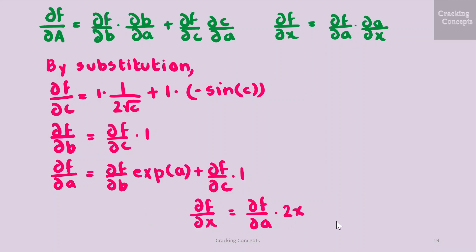By substituting the results of the derivatives of the elementary functions, we get: df by dC as 1 times 1 by 2 root c plus 1 times minus sin of c; df by dB equal to df by dC into 1; df by dA equal to df by dB into exponential of a plus df by dC into 1; and df by dx as df by dA into 2x. By thinking of each of the derivatives above as a variable, we observe that the computation required for calculating the derivative is of similar complexity as the computation of the function itself. This is quite counterintuitive since the mathematical expression for the derivative df by dx is significantly more complicated than the mathematical expression of the function f.